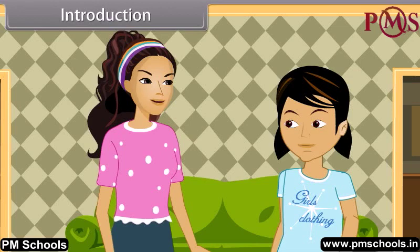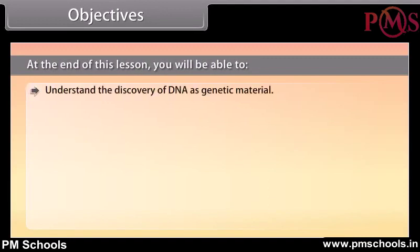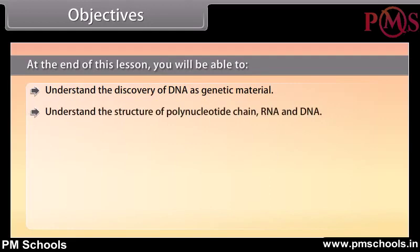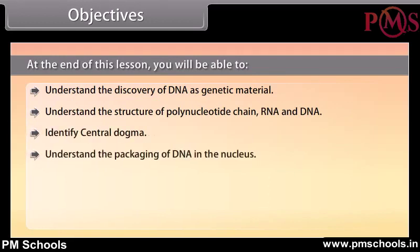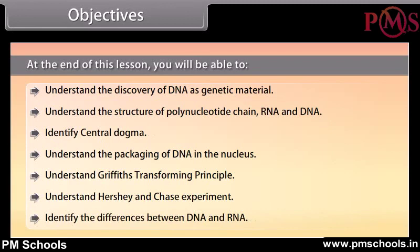Let me explain in detail. At the end of this lesson you will be able to: understand the discovery of DNA as genetic material; understand the structure of polynucleotide chain, RNA and DNA; identify the central dogma; understand the packaging of DNA in the nucleus; understand Griffith's transforming principle; understand the Hershey and Chase experiment; and identify the differences between DNA and RNA.